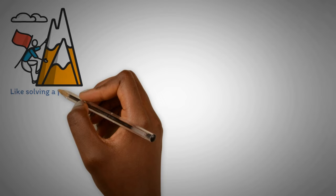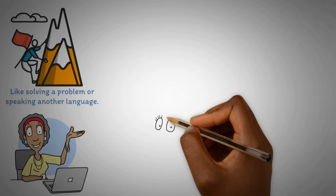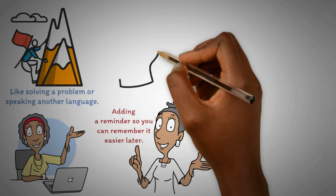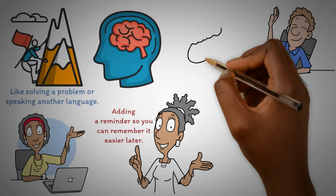The goal is to use what you've learned when you need it, like solving a problem or speaking another language. You get better at this by practicing and connecting new stuff to things you already know. Every time you practice, it's like adding a reminder so you can remember it easier later. Your brain is super good at learning new things all your life. It's built to evolve and get better at things.